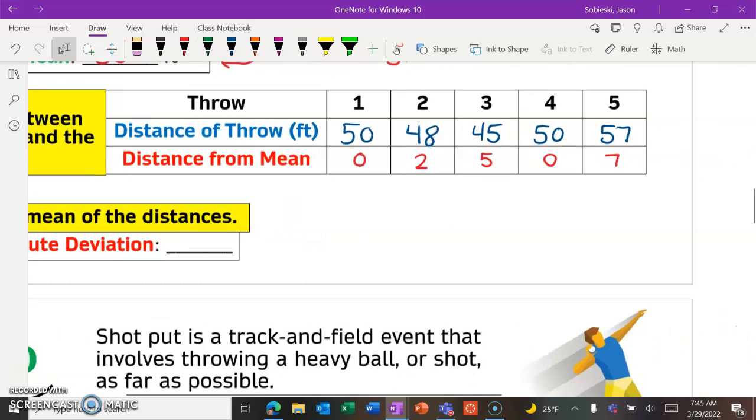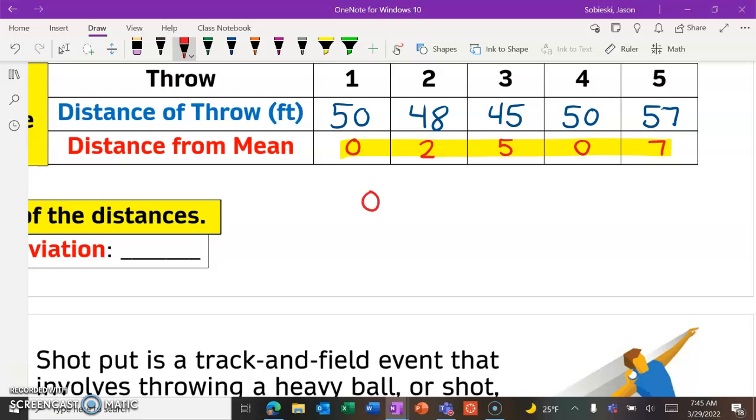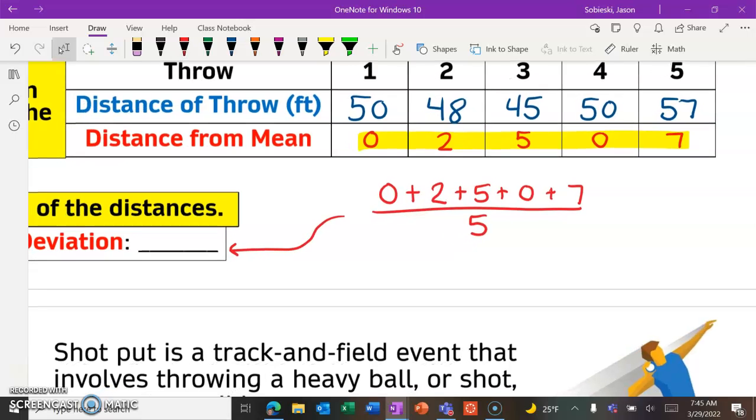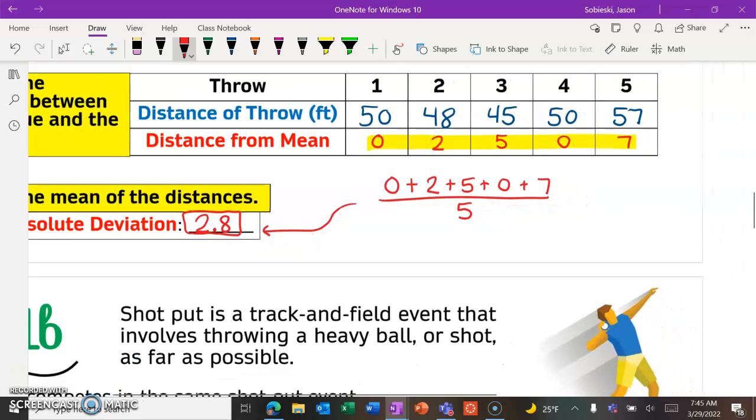Step three is to just take these five distances that we calculated, and we have to find the average or the mean of those. So we have zero plus two plus five plus zero plus seven, and we're going to divide by the amount of numbers, which was five. And if we do this, that should give us a mean absolute deviation of 2.8 for this one. So that is the MAD.